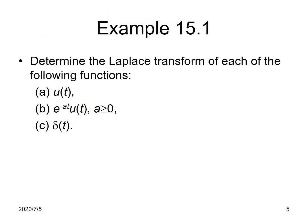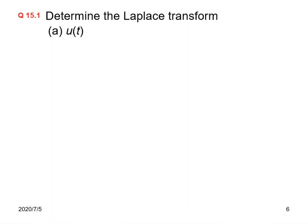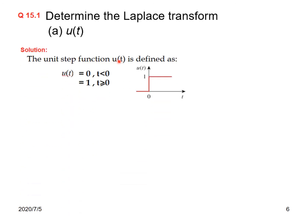Now let's do example 15.1. We have to determine the Laplace transform of the following functions: a unit step function, an exponential function, and a delta or impulse function. For the first one, we determine the Laplace transform of u(t). The unit step function u(t) is defined as 0 for t less than 0, and 1 for t greater than or equal to 0.